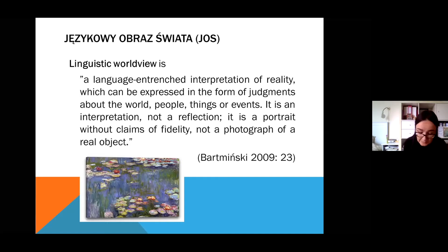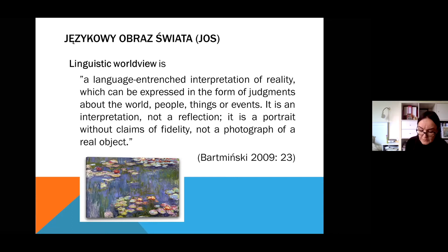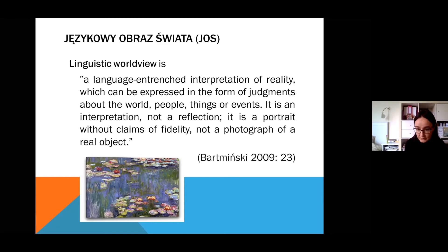Now let us move to the Ethno-Linguistic School of Lublin. The most important theoretical source of this cultural approach to language is the work of Wilhelm von Humboldt, the 18th century philosopher and linguist who wrote about Weltansicht, or linguistic picture of the world. That term became the most important theoretical notion for Bartmiński and his team, upon which all other theoretical terms are built. So what is językowy obraz świata? According to Bartmiński, it is a language-entrenched interpretation of reality, expressible in the form of judgments about the world, people, things, or events. It is an interpretation, not a reflection — a portrait without claims of fidelity, not a photograph of a real object.